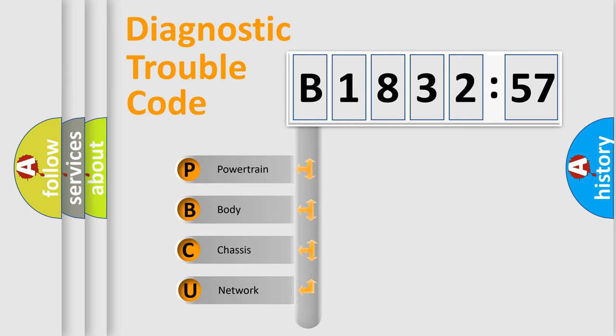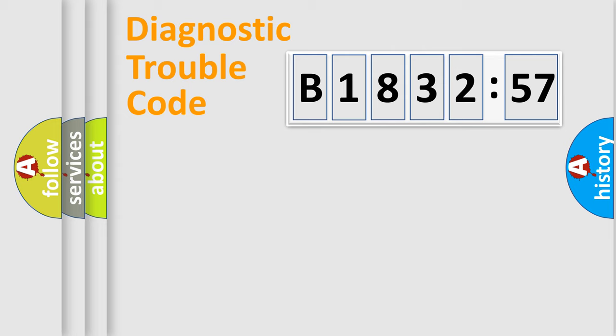First, let's look at the history of diagnostic fault code composition according to the OBD2 protocol, which is unified for all automakers since 2000. We divide the electric system of automobile into four basic units.